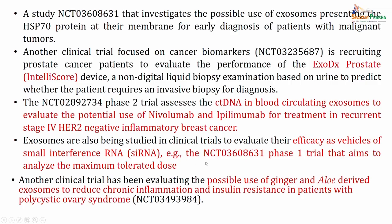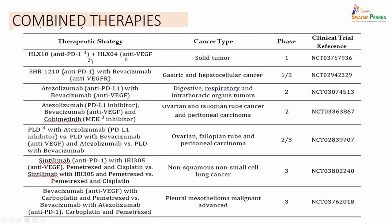Similarly, another phase 2 trial is assessing ctDNA in blood circulating exosomes to evaluate the potential use of nivolumab and ipilimumab for treatment in recurrent stage 4 HER2-negative inflammatory breast cancer. One can assess the exosomes in the circulating tumor DNA. Exosomes are also being studied in clinical trials to evaluate their efficacy as vehicles of siRNA, with a phase 1 trial aiming to analyze the maximum tolerated dose. There is another clinical trial evaluating the possible use of ginger and aloe-derived exosomes to reduce chronic inflammation and insulin resistance in patients with PCOS. There are also combined therapies with anti-PD-1 along with anti-VEGF or anti-VEGFR, and combinations including a PD-L1 inhibitor with anti-VEGF and a MEK inhibitor being tried in several clinical trials.